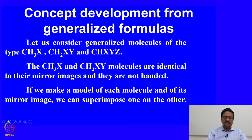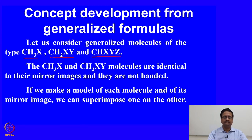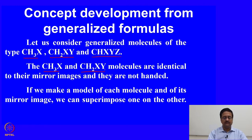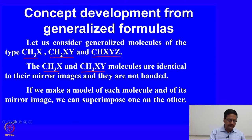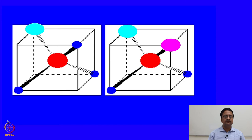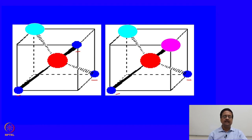When understanding the origin of chirality, we consider three generalized molecules: CH3X, CH2XY, and CHXYZ. CH3X and CH2XY molecules are identical to their mirror images and hence are not handed. If we make a model of each molecule and its mirror image, we can superimpose one on the other — molecules with three groups the same or two groups the same have mirror images that superimpose without any problem. Therefore, these molecules are not handed or not chiral.